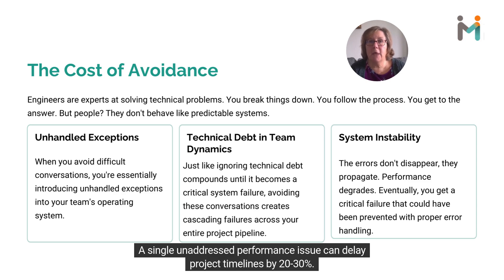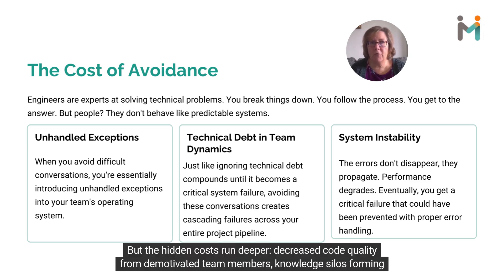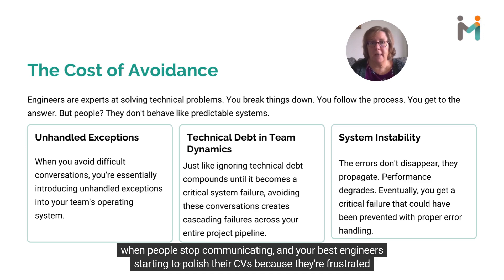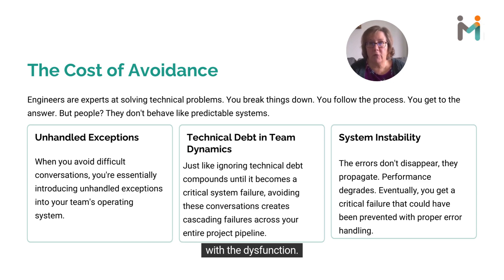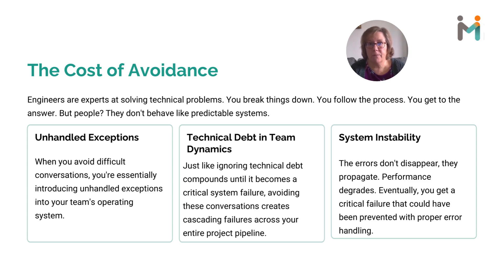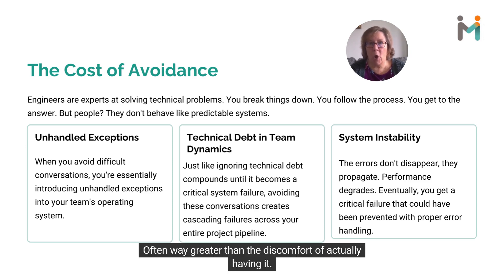A single unaddressed performance issue can delay project timelines by 20-30%, but the hidden costs run deeper: decreased code quality from demotivated team members, knowledge silos forming when people stop communicating, and your best engineers starting to polish their CVs because they're frustrated with the dysfunction. The cost of avoiding one conversation? Often way greater than the discomfort of actually having it.